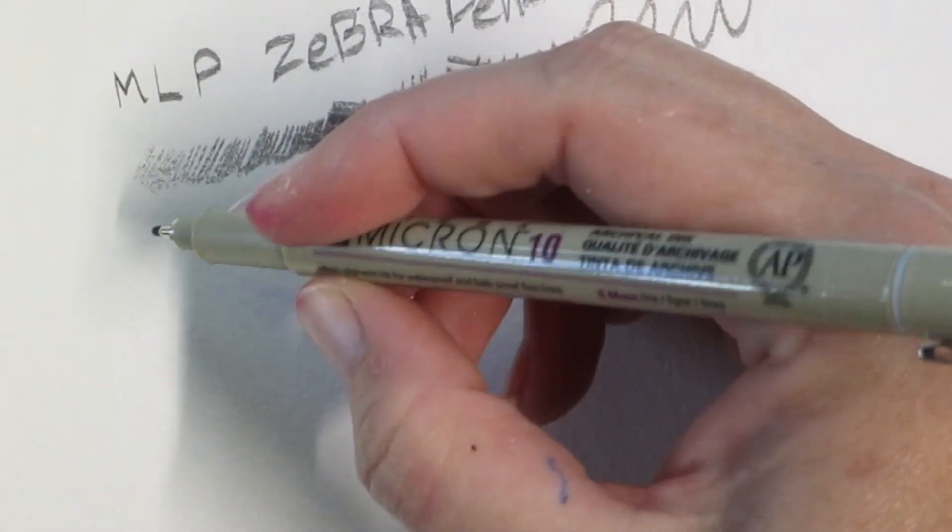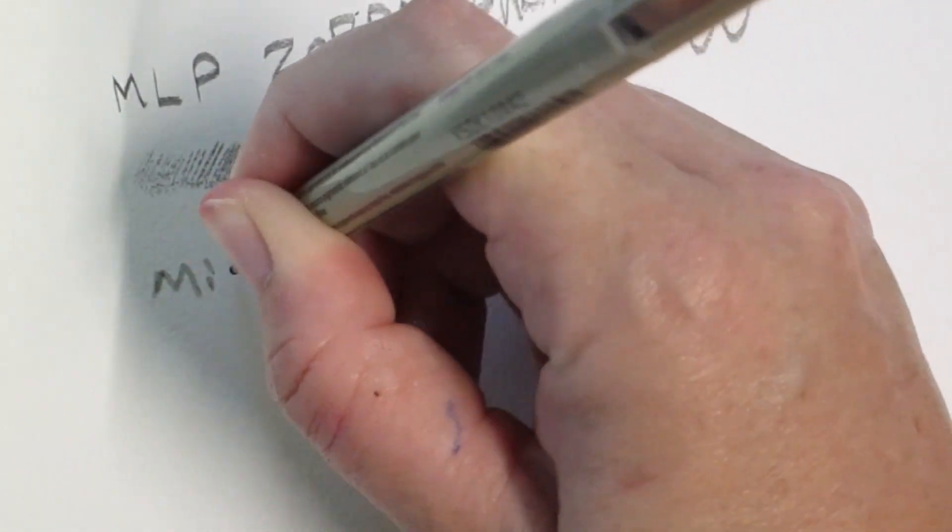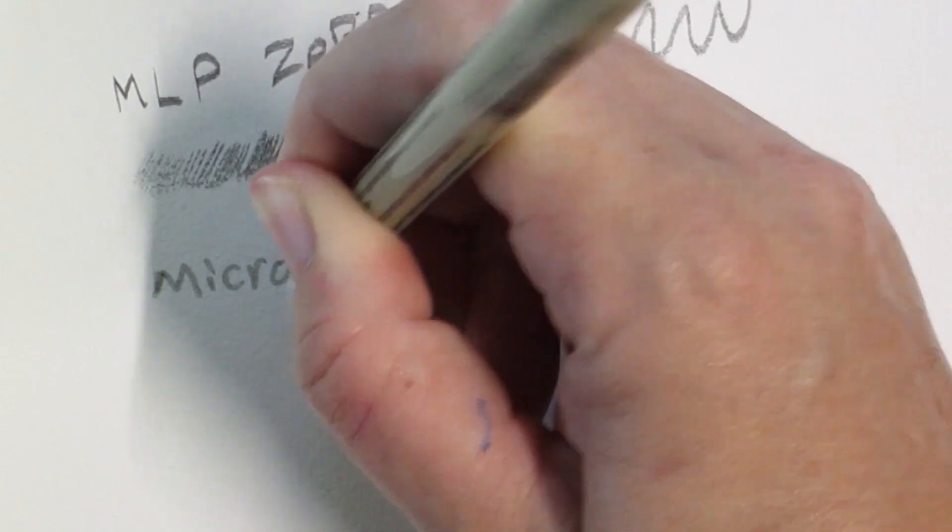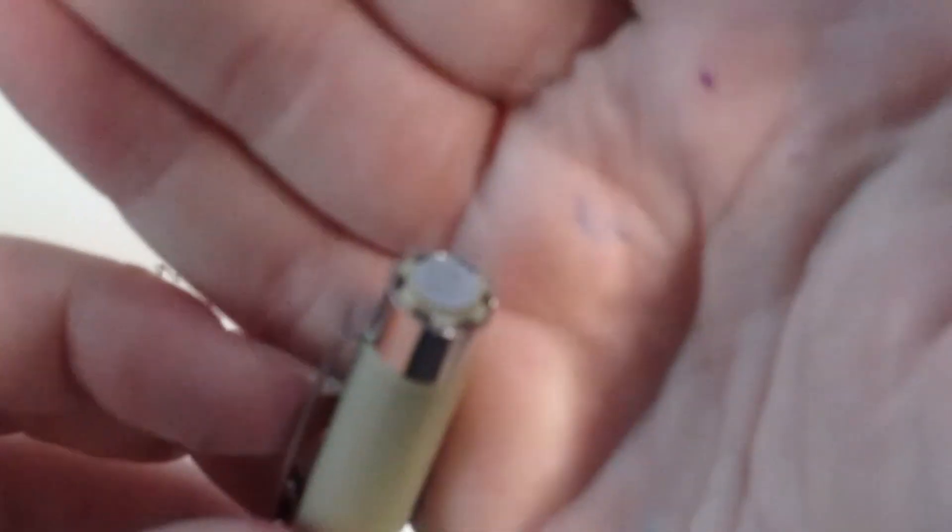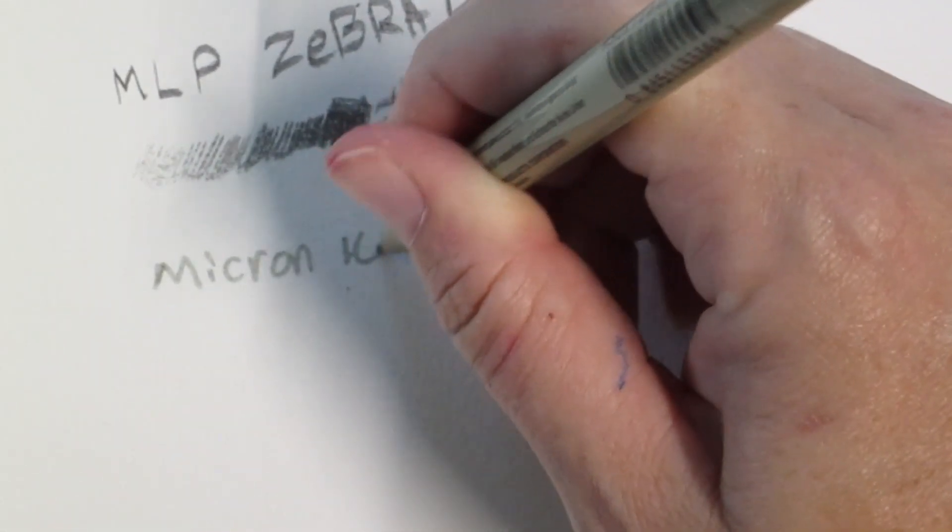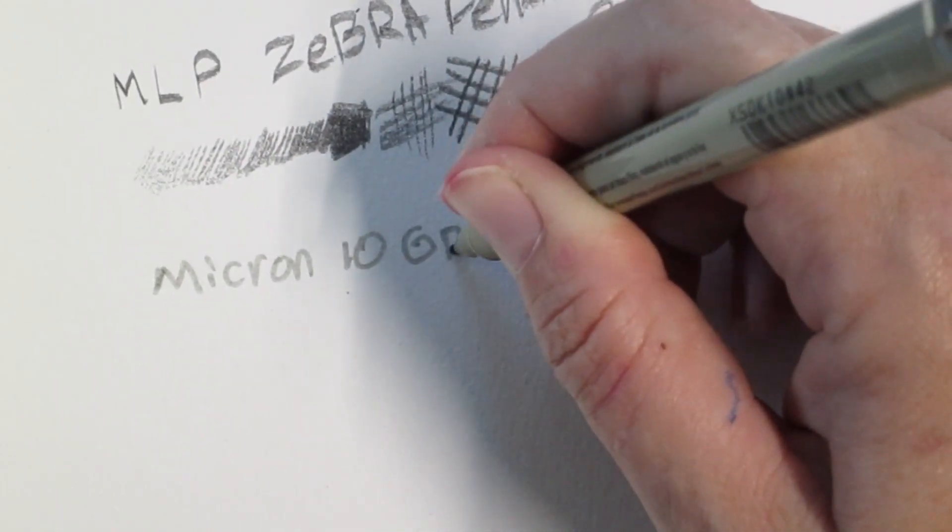I'm really excited about trying out this micron pen. What? It's grey. How did I not notice this before? I mean like it was right there in front of me and everything. Ooh I love me a good grey pen.